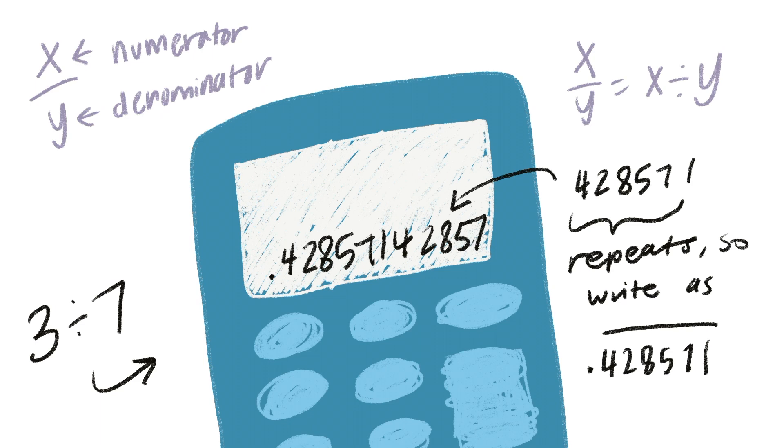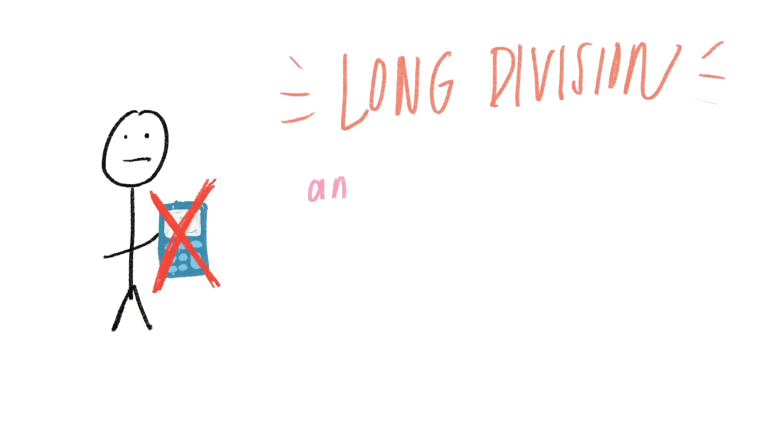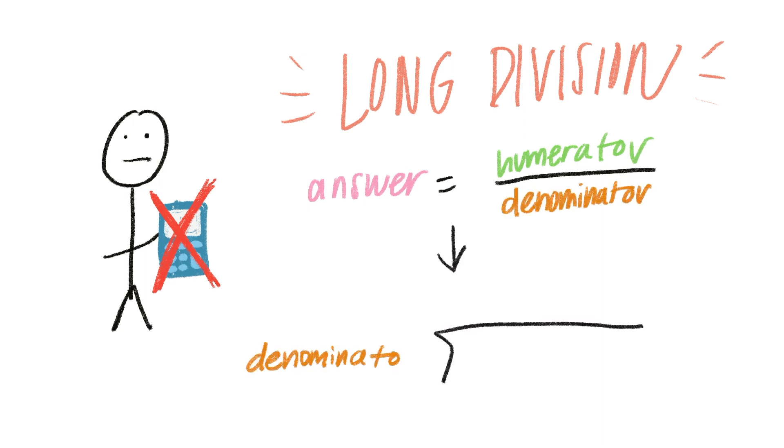Okay, so say you don't have a calculator. This is when you can use long division. The numerator becomes the dividend, the denominator becomes the divisor, and you get the answer as the quotient. But how can you do this when the dividend is obviously smaller than the divisor? We can learn by examples.